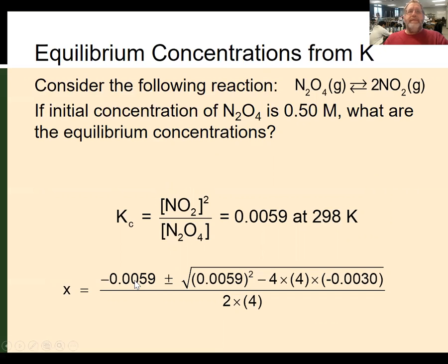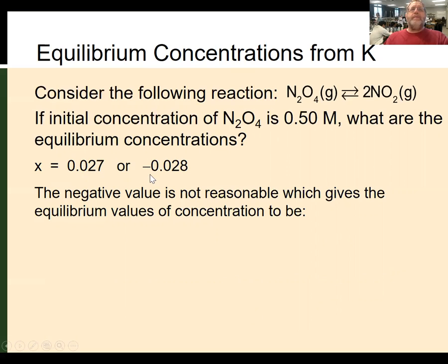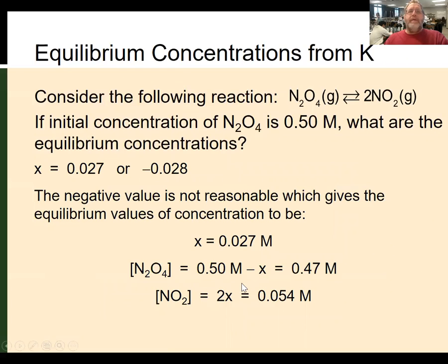Going through the solution: using the quadratic formula, −b ± √(b² − 4AC) all over 2A, noting that C is a negative value, we get two values: x = 0.027 or x = −0.028. The negative value doesn't have any real meaning because it would give a negative concentration of NO2, which doesn't make sense. So x = 0.027. Going back to our equilibrium values, N2O4 = 0.50 − 0.027 = 0.47, and NO2 = 2(0.027) = 0.054. We can verify by substituting back into the equilibrium expression.